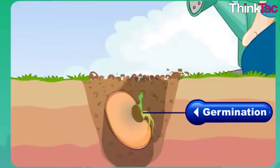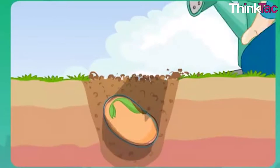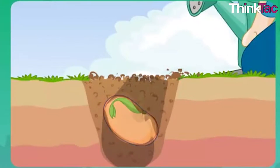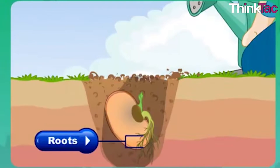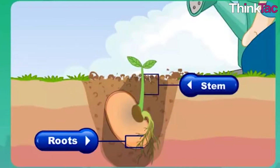Have you ever planted a seed in the soil or seen anyone do it? If yes, you must have seen how the seed is buried inside soil and then watered. Soil, being porous, allows air to reach the seeds, and watering it ensures that the seeds get enough water. Once these two basic conditions are met, the seed germinates in a few days and you see tiny saplings or sprouts coming out of the soil. This is exactly what we have seen in our activity today. By regular watering of planted seeds, we ensure that there is enough but not too much water available for the seed.